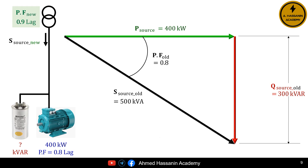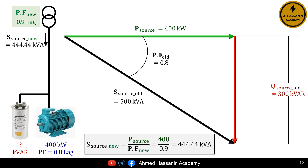Then we must repeat the previous calculations using the new power factor, which equals 0.9. So the total power of the source after installing the capacitor, that is, after improving the power factor, S source new, is equal to the active power P source divided by the new power factor, which equals 400 kilowatts divided by 0.9. Therefore, S source new equals 444.44 kilovolt amperes.